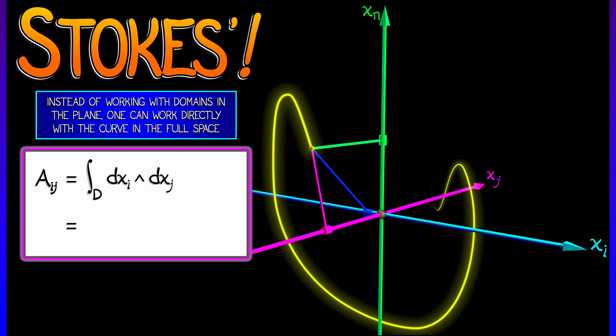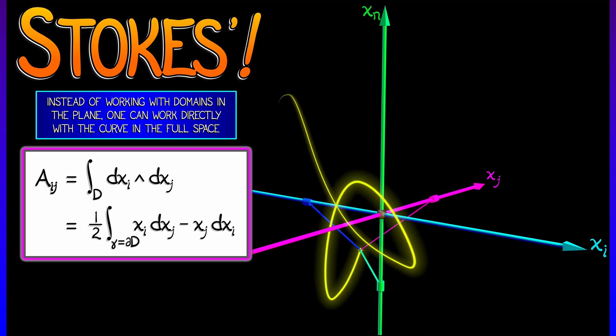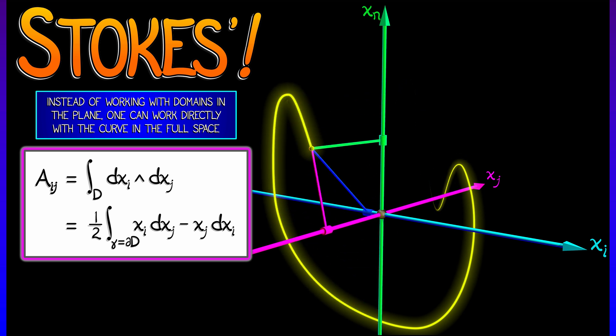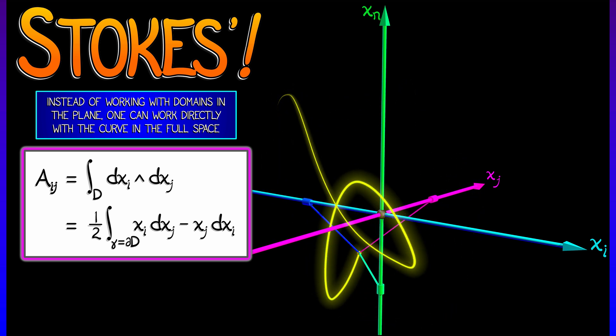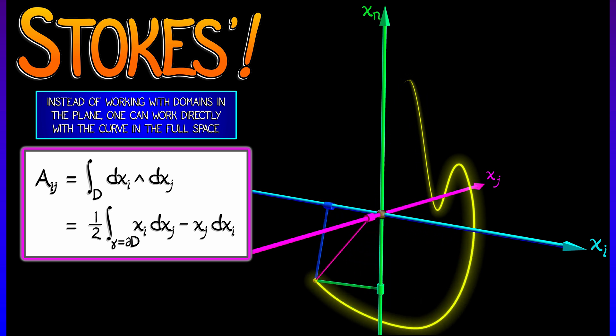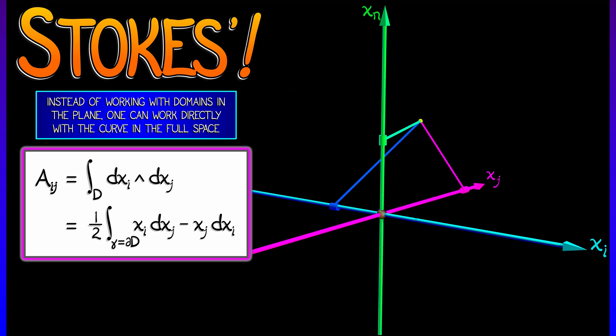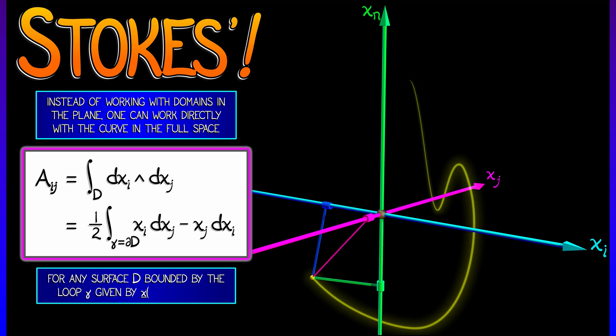Now, what Stokes' theorem says is that we can replace that with the integral over the boundary of this region of the one-form field one-half xi dxj minus xj dxi. Do you see how that works? That reminds me of something we did back in chapter 15.